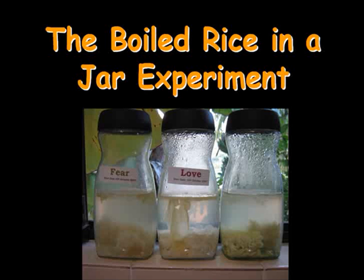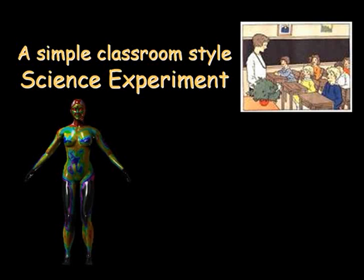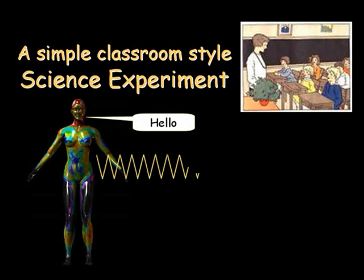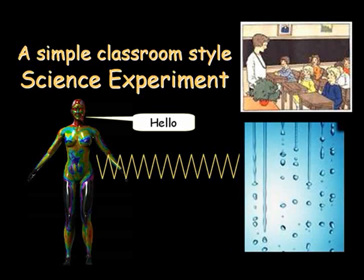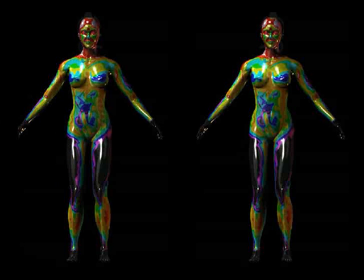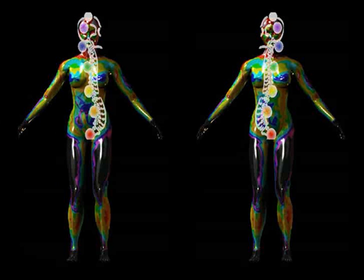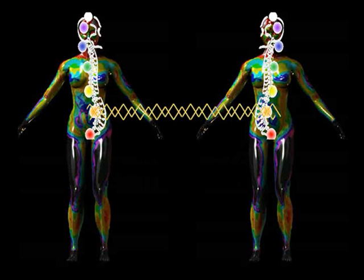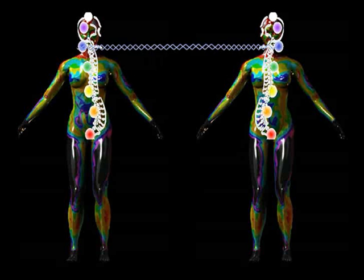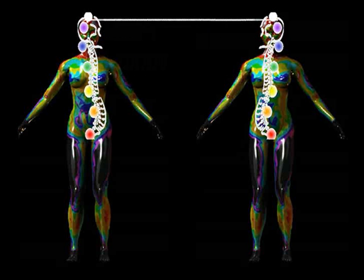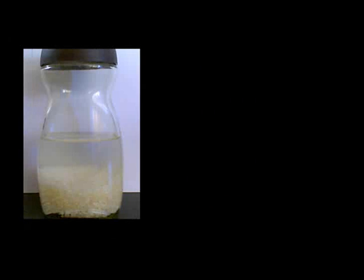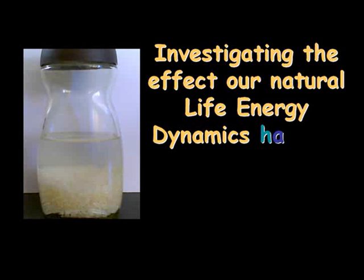The boiled rice in a jar experiment is a simple classroom-style science experiment that investigates the effect our natural life energy dynamics have on the molecular structure of water. Every time we communicate, the message we send also includes subtle waves of life energy. The amplitude and frequency of these life energy dynamics convey meaning. Dr. Emoto investigated the effect of life energy dynamics on the molecular structure of water by causing the water to crystallize. We can also investigate the same effect at home with the boiled rice in a jar experiment.